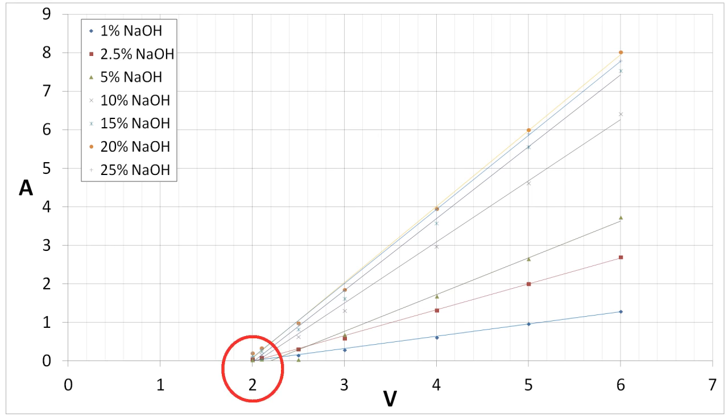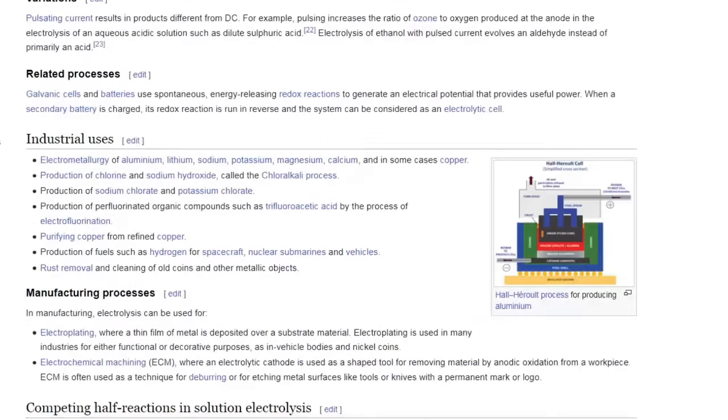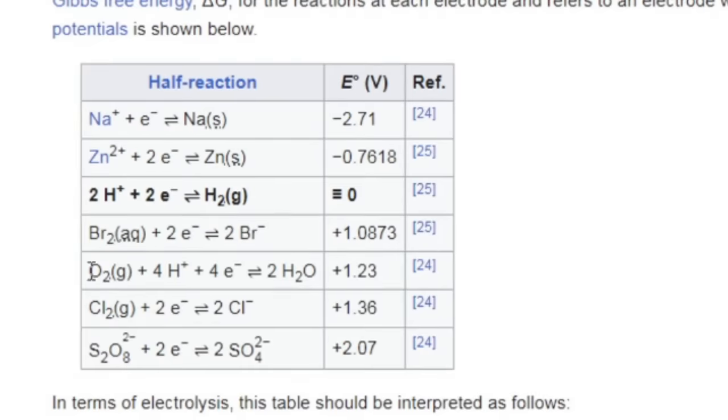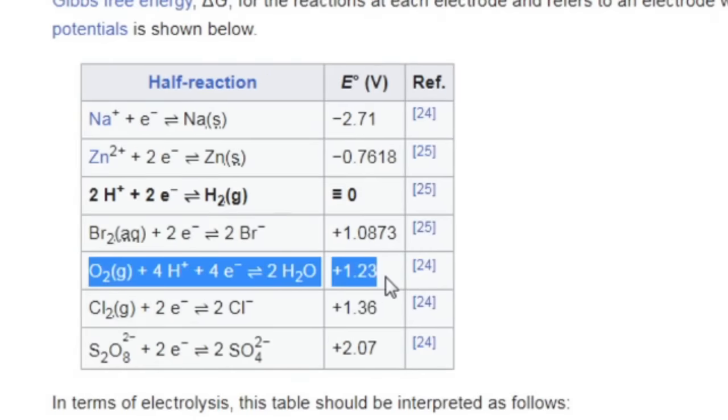The solution didn't start conducting for any concentration of electrolyte until about 2 volts, so the simple assumption of I equals V over R isn't valid for electrolysis. Instead, the equation would be I equals V minus V threshold over R. According to the Wikipedia article on water electrolysis, this threshold voltage is theoretically 1.23 volts at room temperature, but in practice it seems to be somewhere between 1.8 to 2.0 volts.